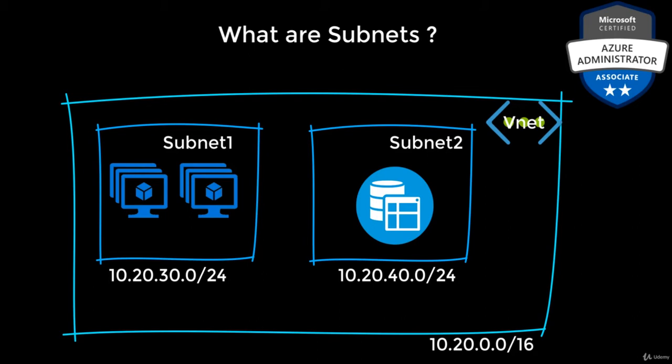Each subnet contains a range of IP addresses that fall within the virtual network address space. Each subnet must have a unique address range, which we refer to as a CIDR block. The address range cannot overlap with other subnets in the virtual network — meaning other subnets cannot have the same or overlapping CIDR block in that virtual network in the same subscription.